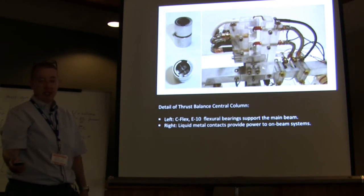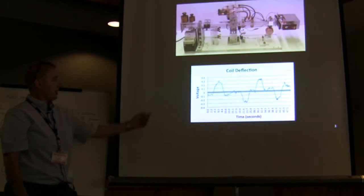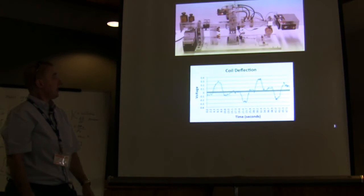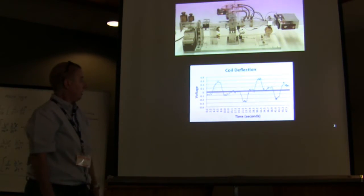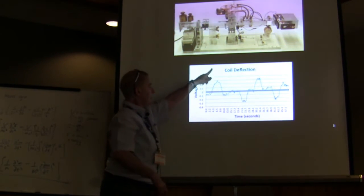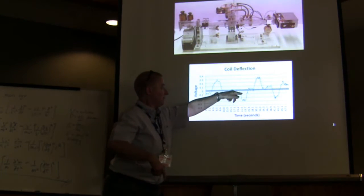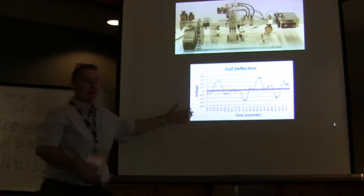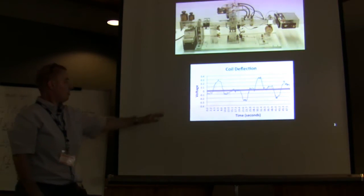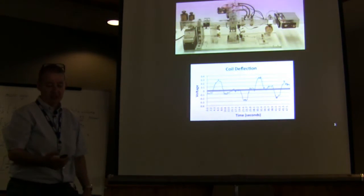Jim is going to talk more about the experiment later. Here's a typical coil deflection trace — nothing is powered apart from the coils. You can flip a switch and the signal goes up, then back to noise, then flip and it goes down and back to noise again. We do many of these and take an average to get the calibration.